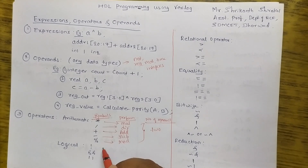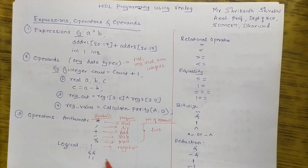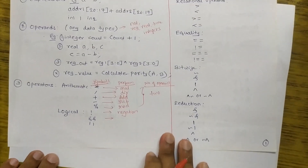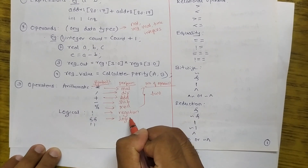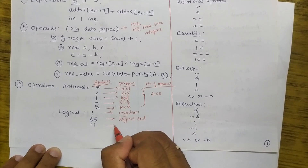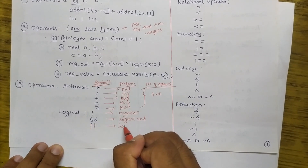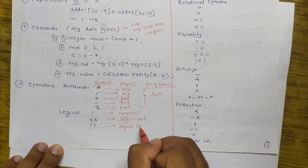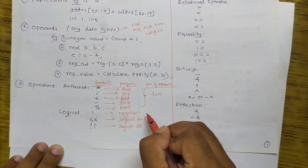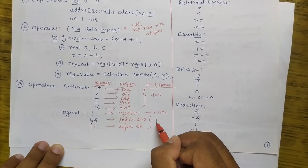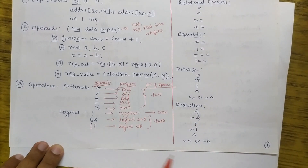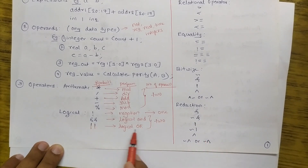Next is the logical operator. The exclamation mark is logical negation, double-ampersand is logical AND, and double-pipe is logical OR. For negation, you need one operand. For logical AND and logical OR, you need two operands — for example, A logical AND with B, or A logical OR with B.